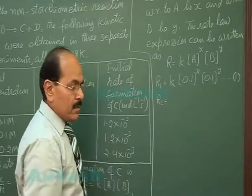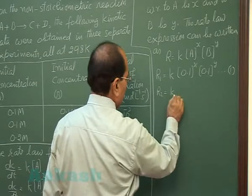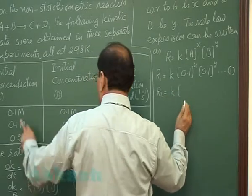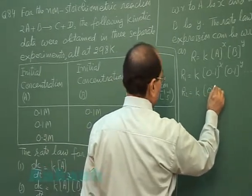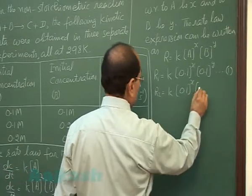For the second experiment, initial rate, let us represent it by R2. Initial concentration of A is 0.1, initial concentration of B is 0.2.